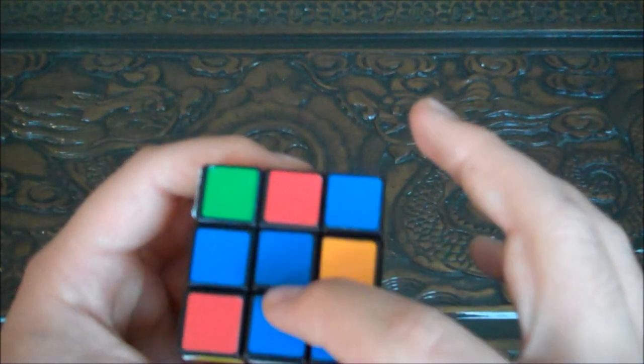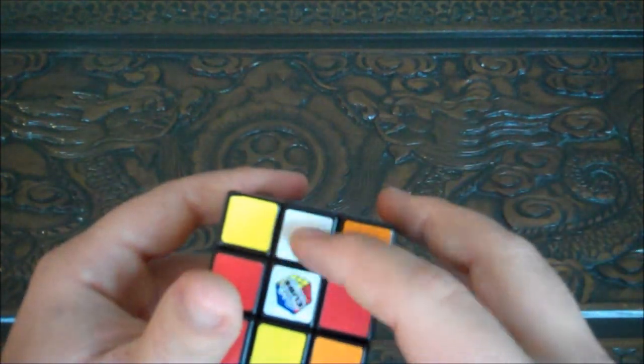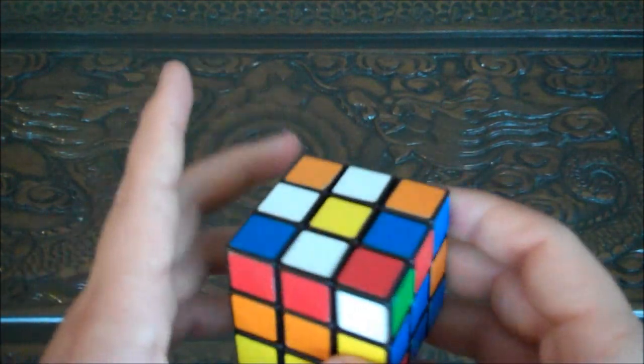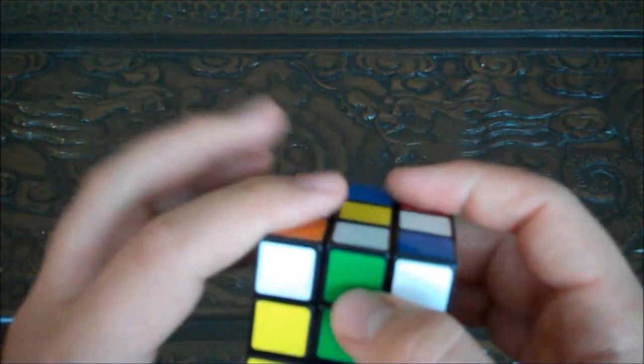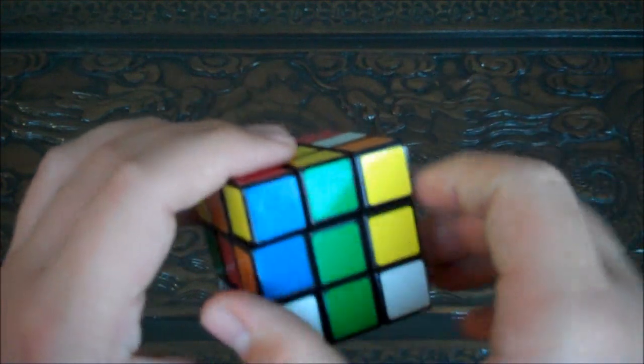You've got this blue line and this white line. You're going to do that for the rest of them. Green's already lined up, so we'll just turn that 180 degrees.